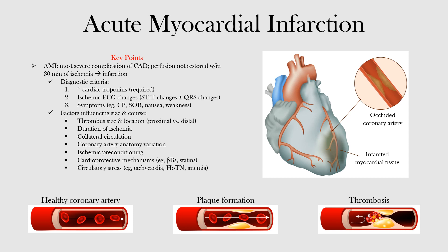An atherosclerotic plaque develops within a coronary artery. At the core of that plaque there are inflammatory cells and lipids which drive chronic inflammation within the arterial wall. Eventually that plaque becomes unstable and ruptures or erodes its cap — the endothelial covering — exposing it to a highly thrombogenic material that can activate platelets and coagulation factors, leading to the formation of a thrombus.